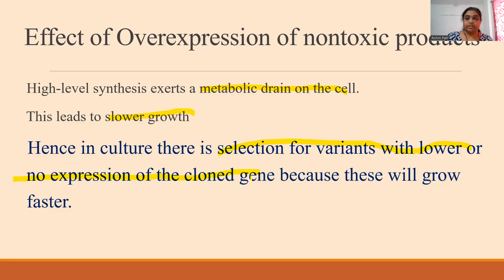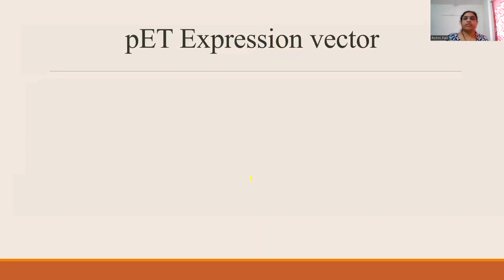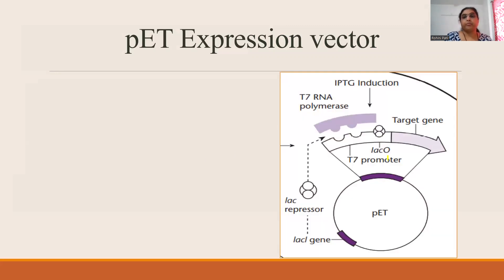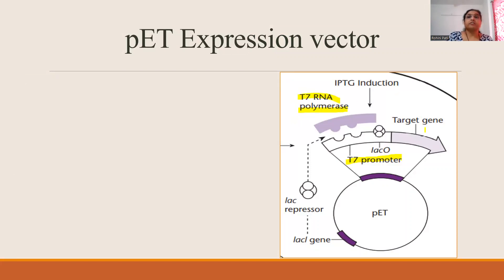Here is an expression vector called pET, which utilizes a regulated promoter — the T7 promoter. The T7 promoter is from the T7 phage and can be recognized only by T7 RNA polymerase; the E. coli RNA polymerase cannot recognize the T7 promoter. In the gene cassette cloned into the pET vector, there is a target gene, a LAC operator, and a T7 promoter.